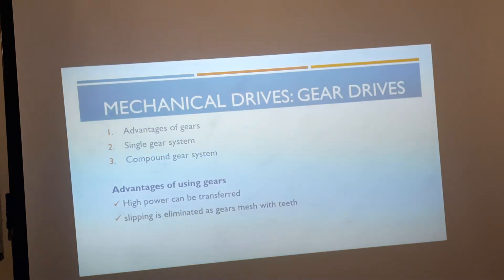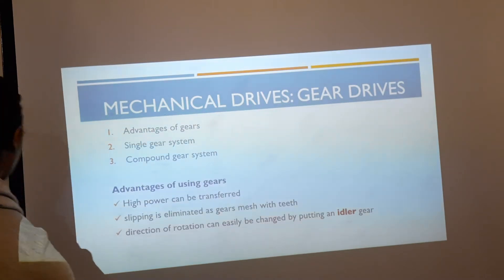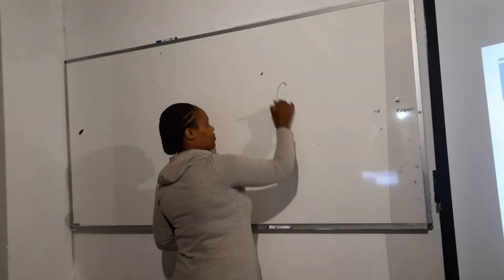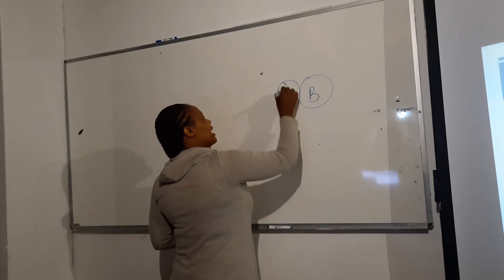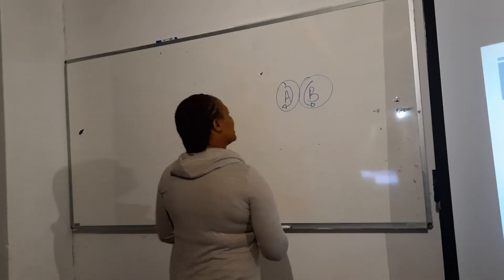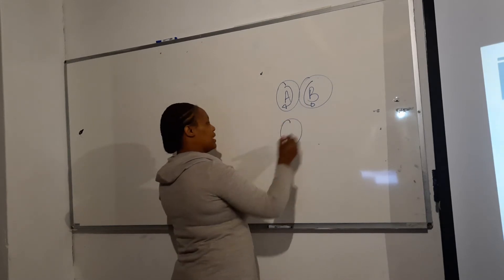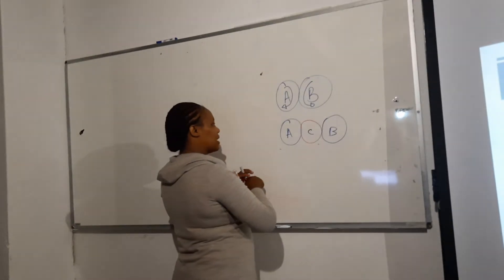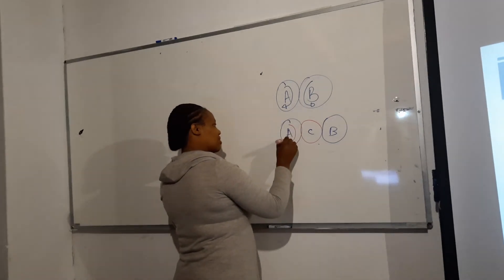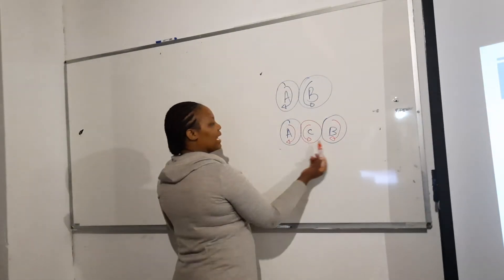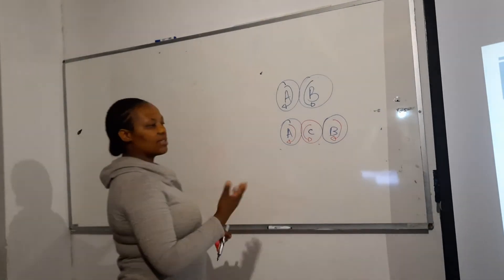Gears don't easily come off like a belt would. The direction of rotation can easily be changed by putting in an idler gear. For example, if you have gear A and gear B — if gear A rotates clockwise, gear B will rotate anticlockwise. However, if you want gear B to rotate in the same direction as gear A, you put what we call an idler gear or intermediate gear in the middle. The idler gear will be anticlockwise and gear B will then be clockwise.